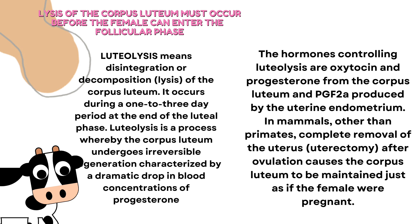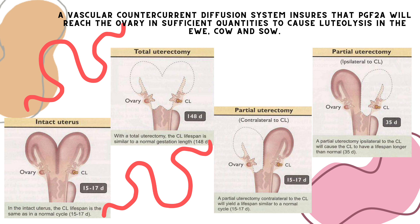Luteolysis is a process whereby the corpus luteum undergoes irreversible degeneration characterized by a dramatic drop in blood concentrations of progesterone. A vascular countercurrent diffusion system ensures that PGF2α will reach the ovary in sufficient quantities to cause luteolysis in the ewe, cow, and sow.